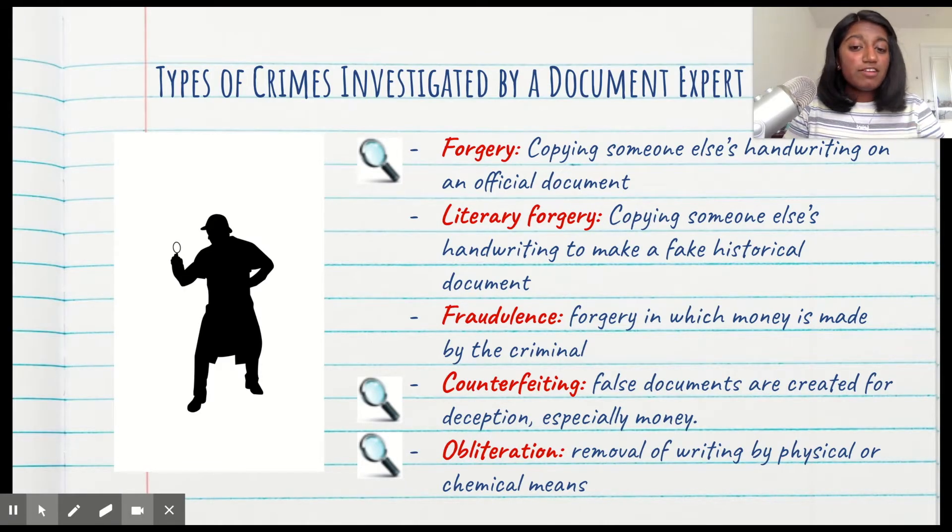If you have literary forgery, that means you're copying someone else's handwriting to make a fake historical document. Let's say you wrote a fake constitution and you want to sell it on eBay. That would be literary forgery if you're passing it off as real. Now, if you actually go through and sell it and make some money, that would be fraudulence—forgery in which money is made by the criminal. So fraudulence is forgery plus money.